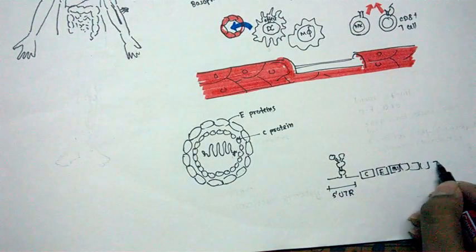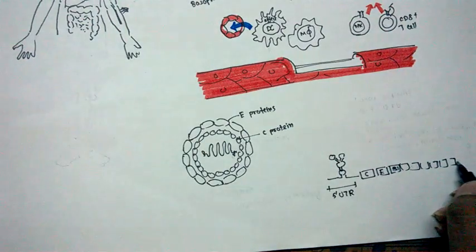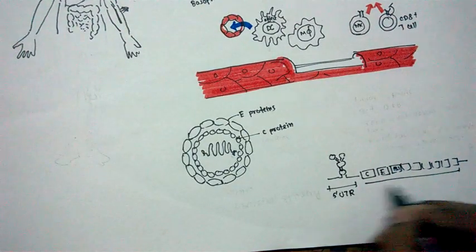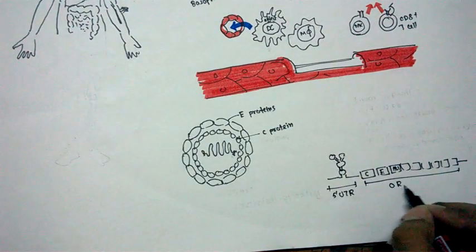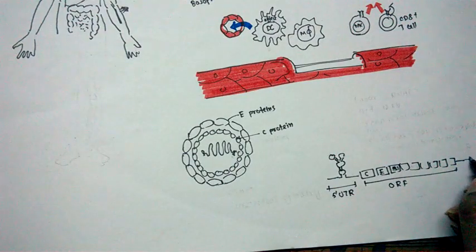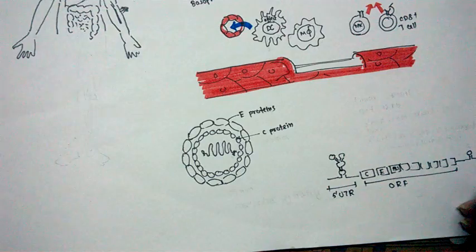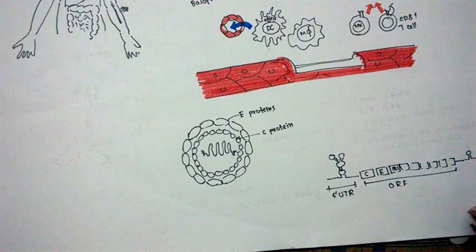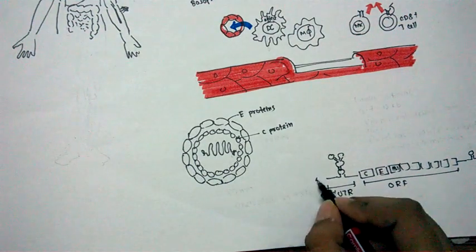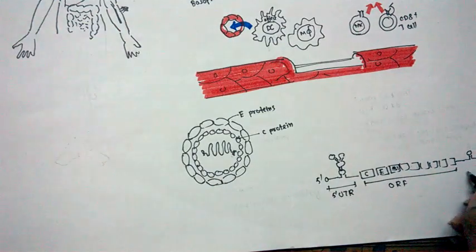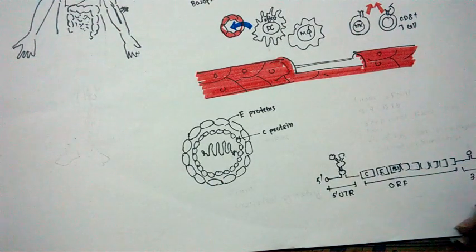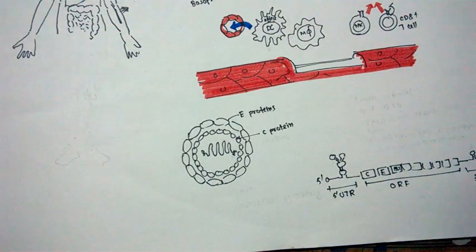After that it has, so this is five prime UTR, then it has a lot of coding region. This is the ORF. I'm not specifying all the proteins that are encoded by this ORF but I'm just generally telling it is ORF. And then it has what we call a three prime region.